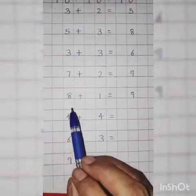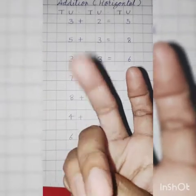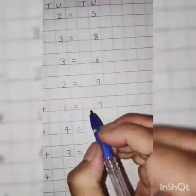4 plus 4. 4 goes on head and 4 on fingers. Hit the 4. What comes after 4? 5, 6, 7, 8. So, answer is 8.